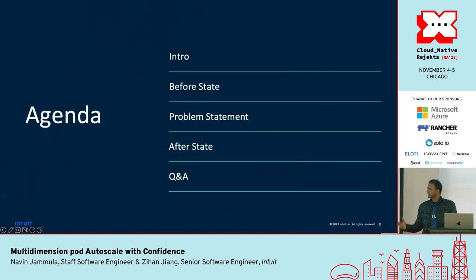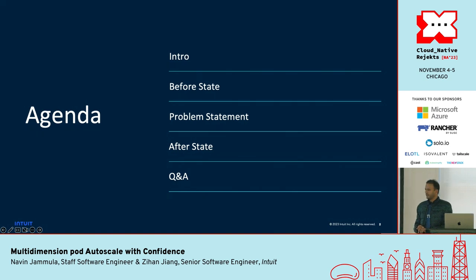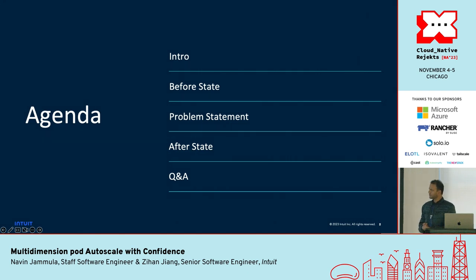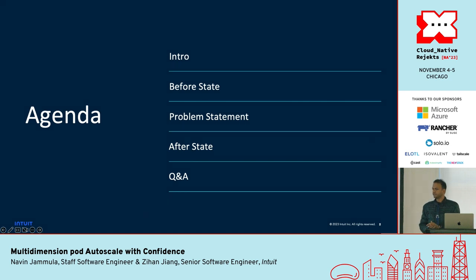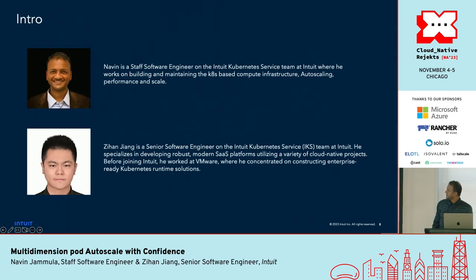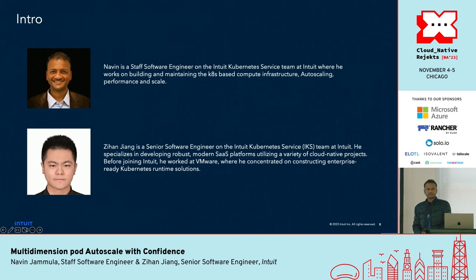Here is our high-level agenda. We'll give our introductions, we have a before state — before our implementation — and we'll talk about the three main problem statements we have. It may be more problem statements for other teams, but these are the three things we'll be talking about, how we have solved those problems, and then we'll open for Q&A.